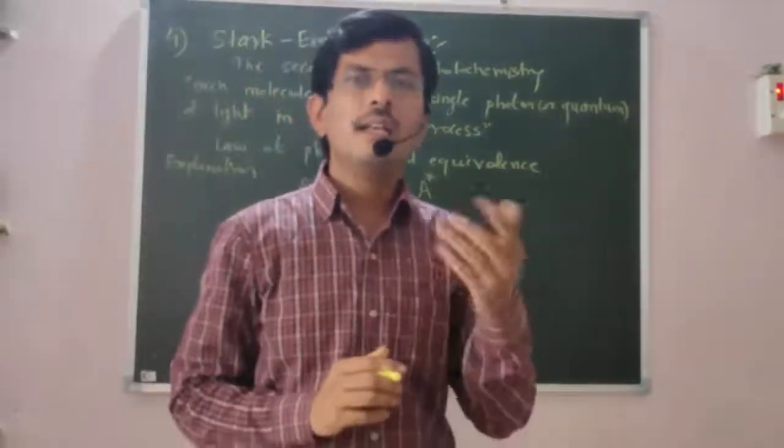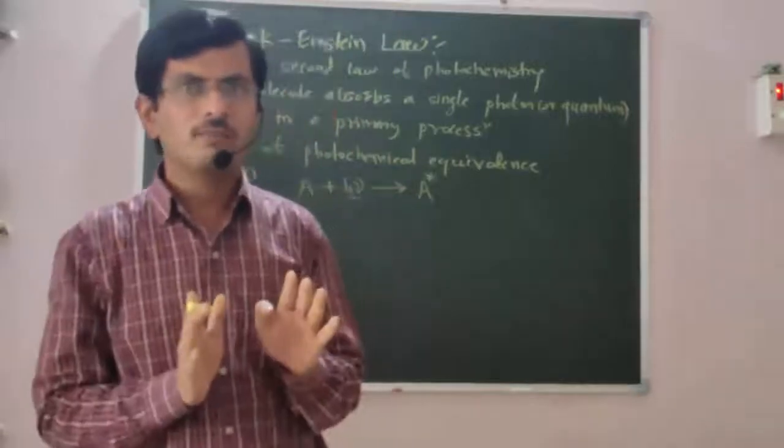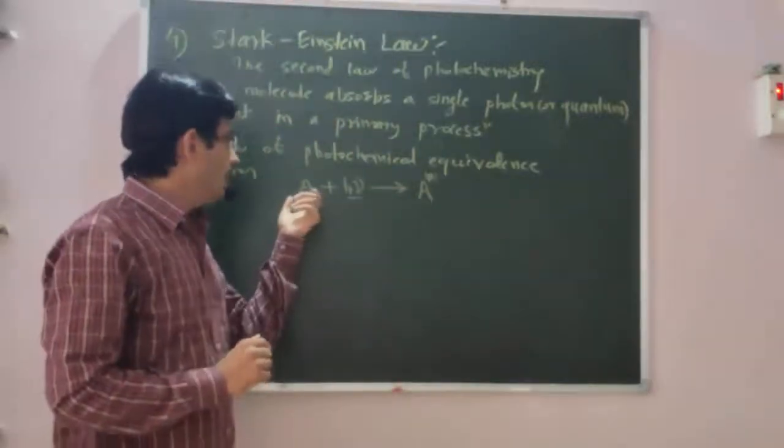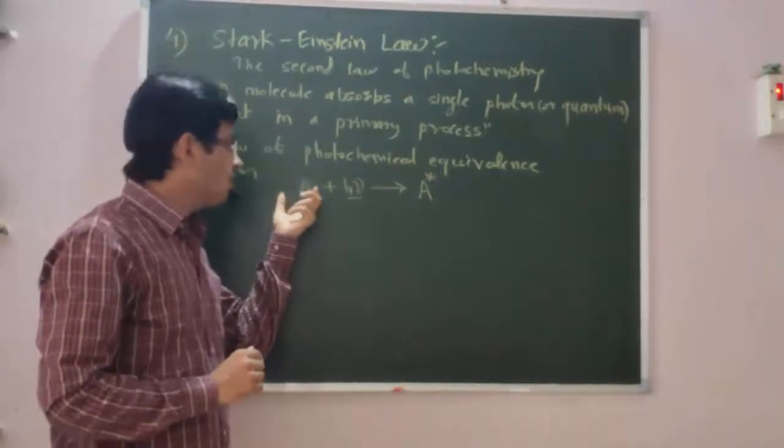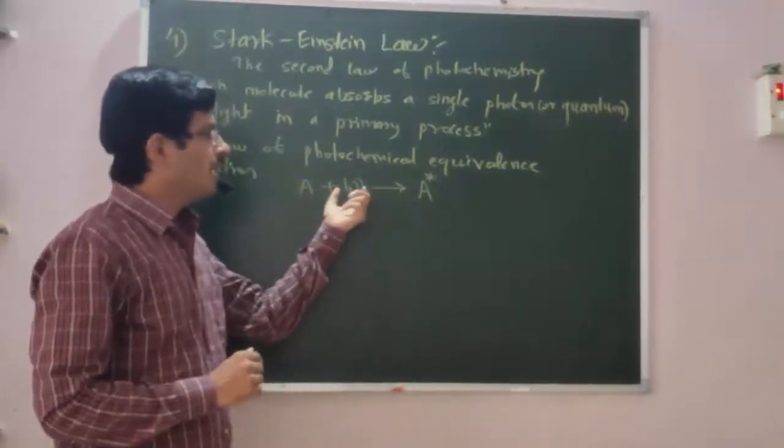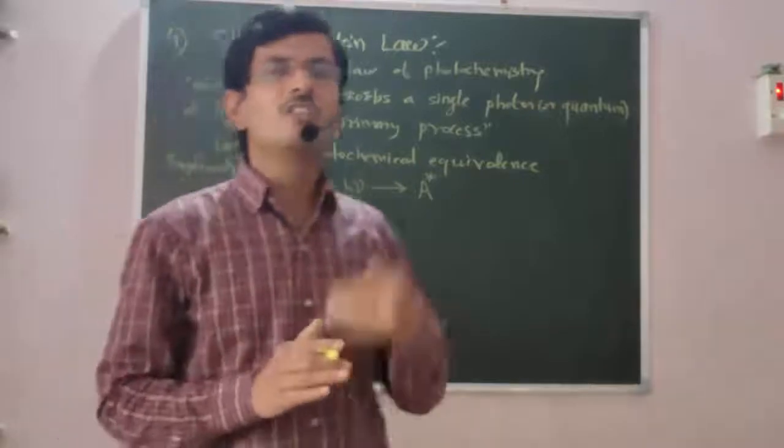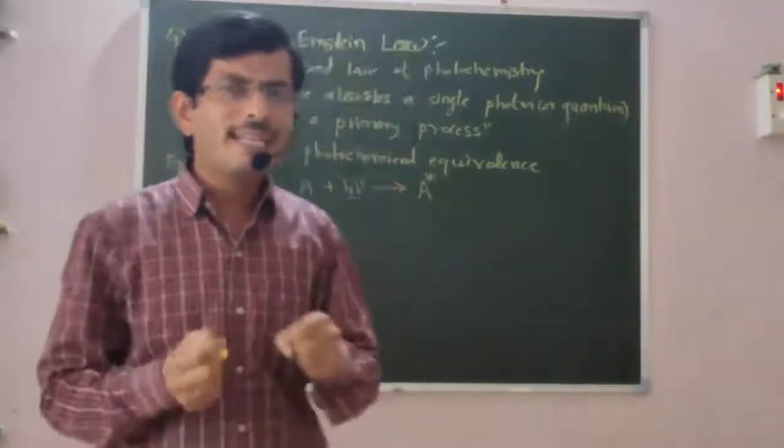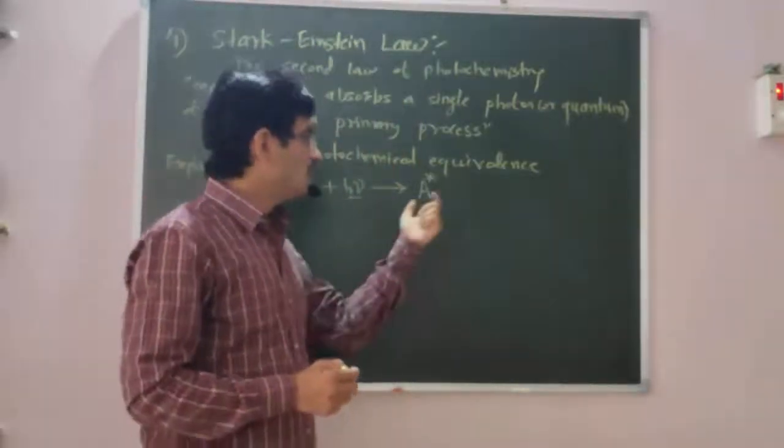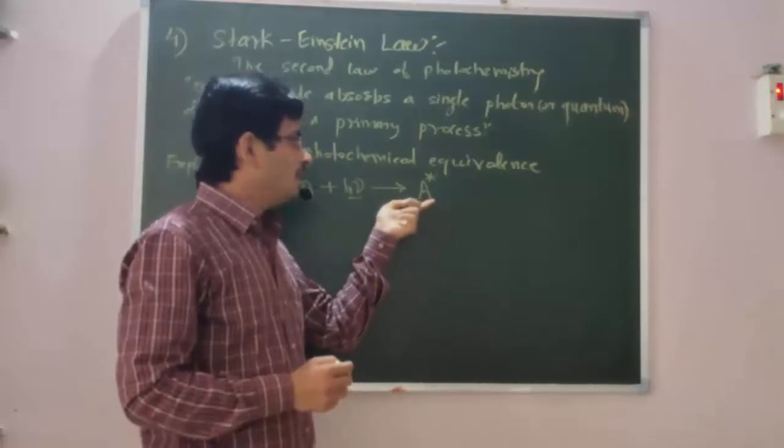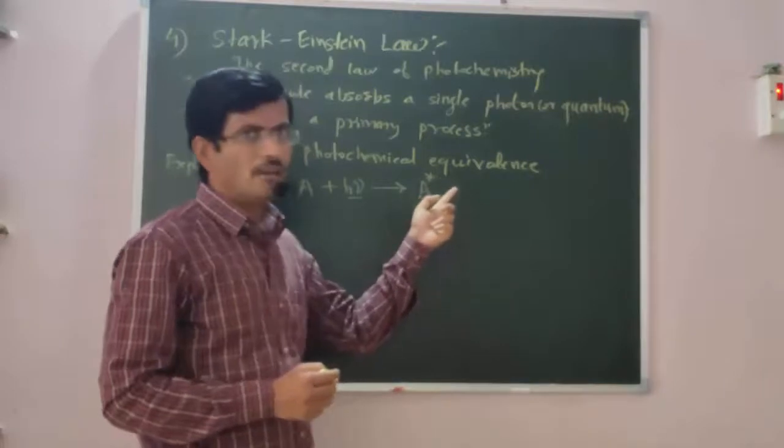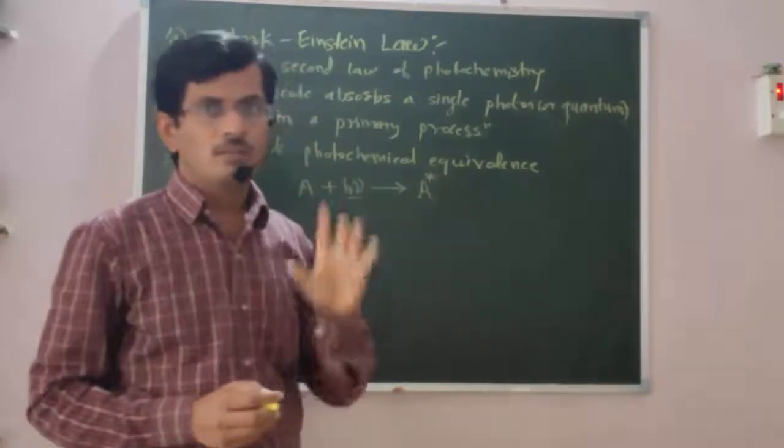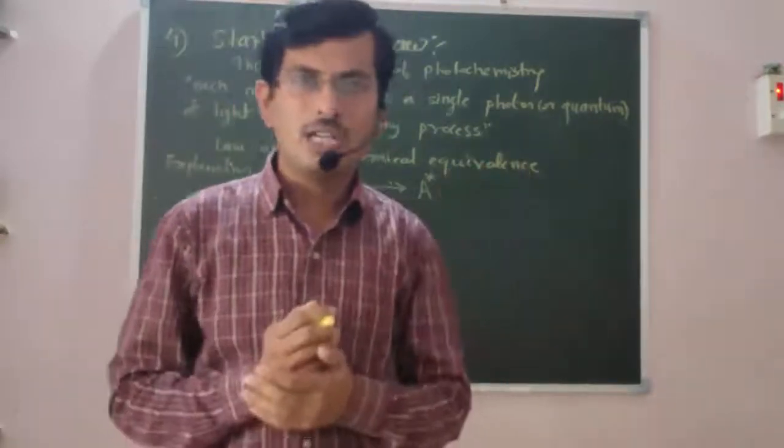This A star is the excited molecule. A is the normal molecule, ground state molecule, and when this normal molecule absorbs a photon, hν, the energy of the photon, it has excess energy and excitation occurs, and this excited molecule is represented by the symbol A star. This A star represents the molecule A is in excited state, having excess energy.